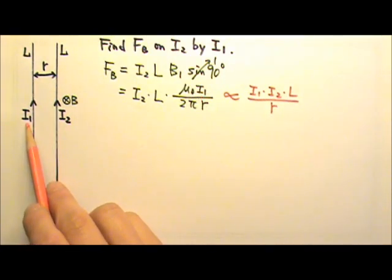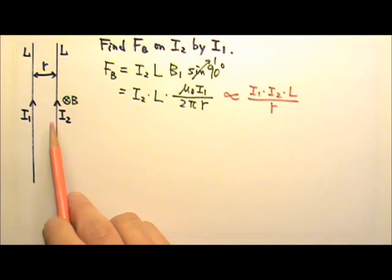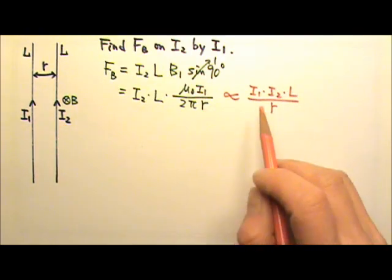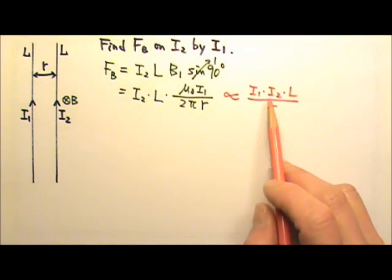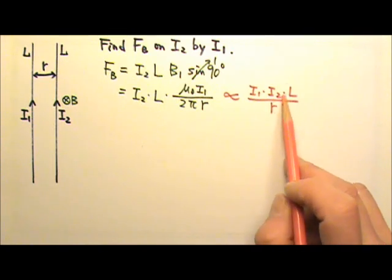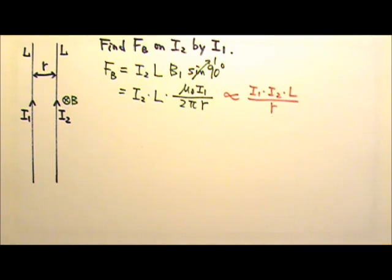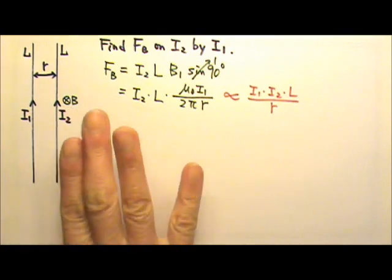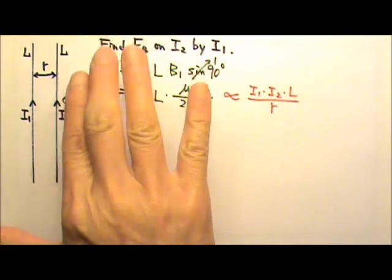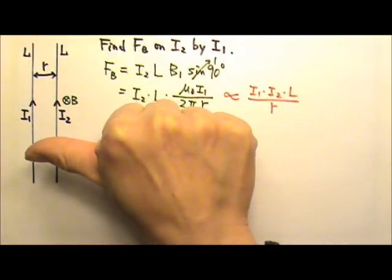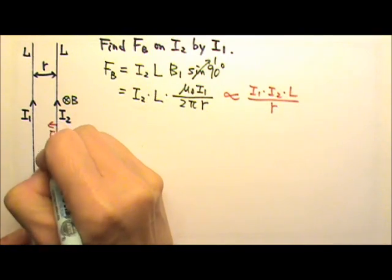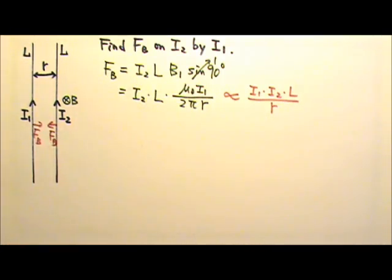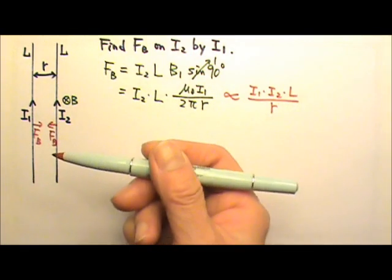The magnetic force on I1 by I2 will be the same amount, because the two exert magnetic forces on each other as an action-reaction pair — equal and opposite. The magnetic force between two parallel currents is proportional to I1 times I2, proportional to the length of the wire, and inversely proportional to the distance. For the direction, using I L cross B, with L going upward and the magnetic field going into the board, the magnetic force on I2 goes to the left, meaning the two currents attract each other. If they are in opposite directions, the magnetic force will be outward, meaning they repel each other.